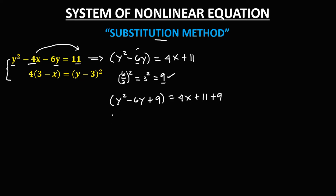Then apply the factoring. For y squared minus 6y plus 9, that factors as y minus 3 — since this one is negative and 9 is 3 times 3 — so we have the quantity of y minus 3 to the power 2, then equals 4x plus 11 plus 9, that's 20. So this is now the new equation number 1.